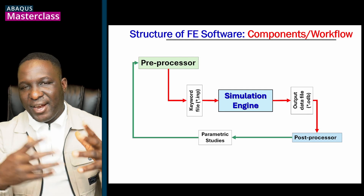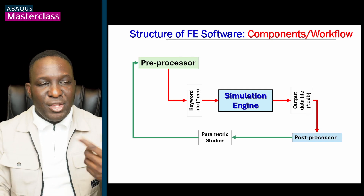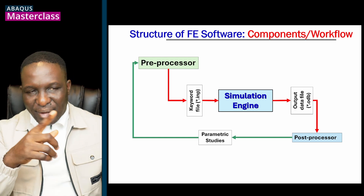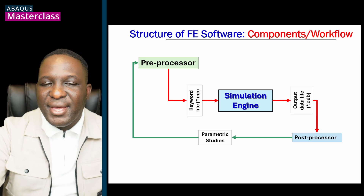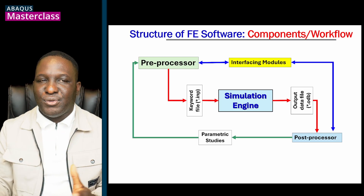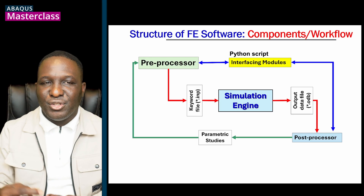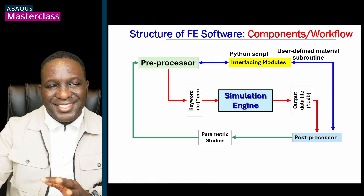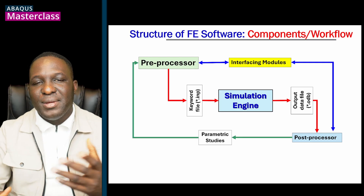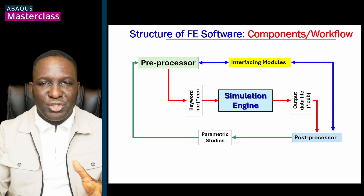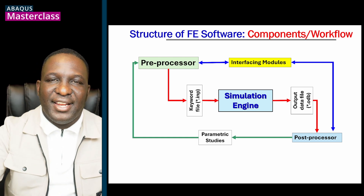From there, you could have a parametric loop — an iterative loop where maybe you improve the mesh, change the material, or change the boundary condition. This sequence continues as part of the finite element solution. There may be instances where you have to introduce some interfacing modules — not necessarily within the central framework — such as Python scripting or a user-defined material file. These are external elements that you bring in to modify, modulate, improve, adapt, or optimize the solution to make it effective within the finite element framework.